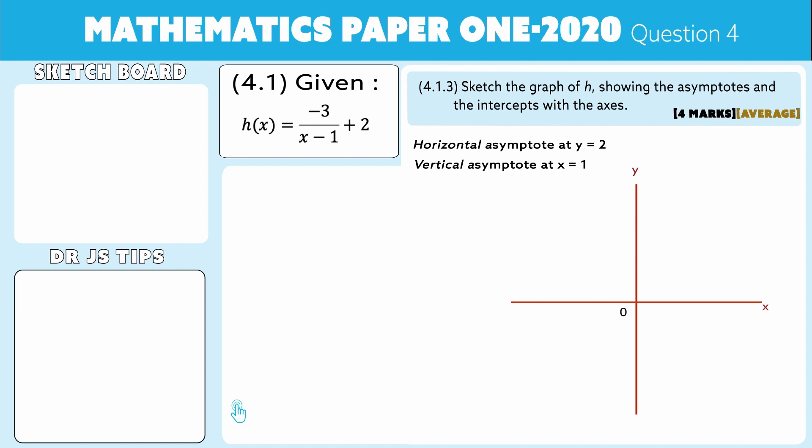My horizontal asymptote lies at y equals 2, so I'm going to more or less use my eye and put it in there. Now folks, remember, put the equation of your horizontal asymptote in.